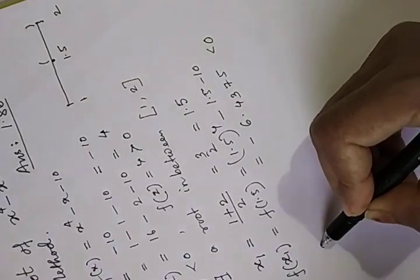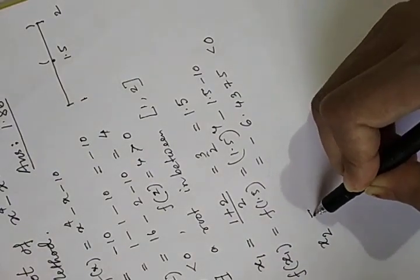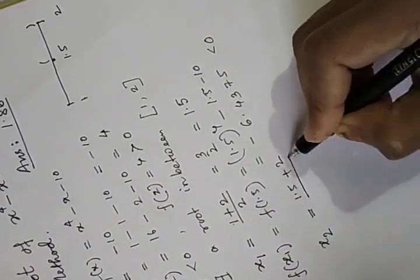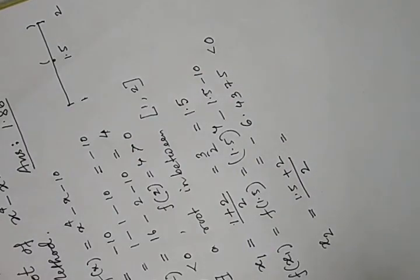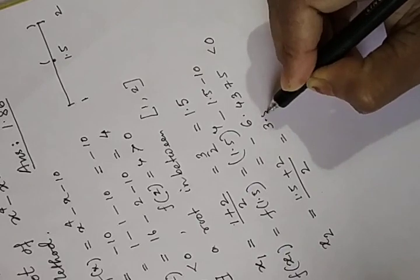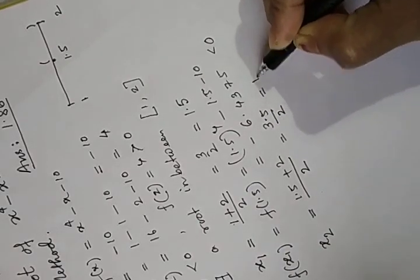So the next approximation is x2. x2 is now (1.5 plus 2) by 2, which is 3.5 by 2, that is 1.75.